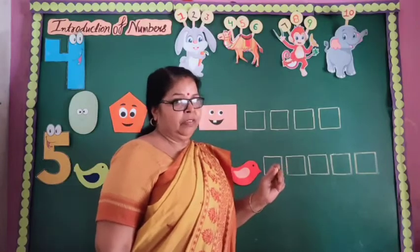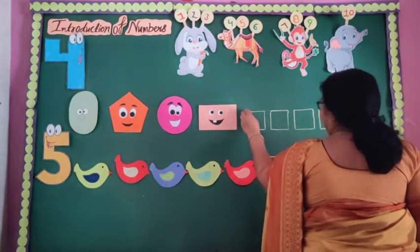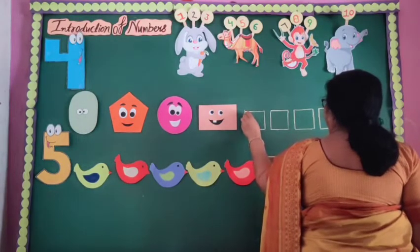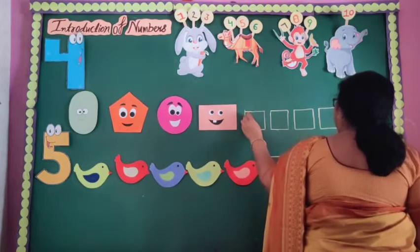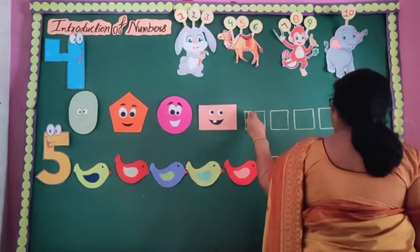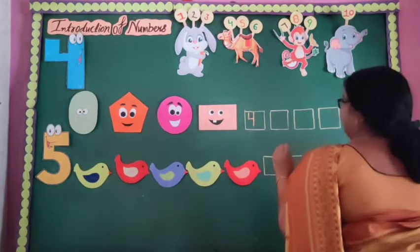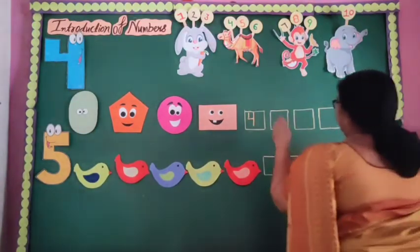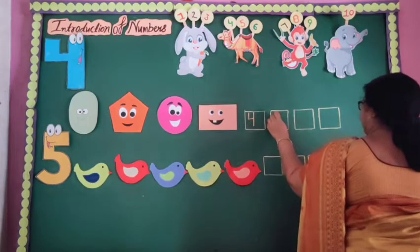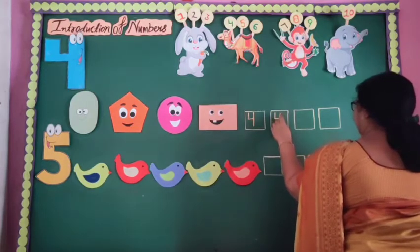How to write number 4. First of all, we draw a small standing line. After that, we draw a small slanting line. After that, we draw a standing line like a base. Let's make number 4. A small standing line, after that a small slanting line, after that make one standing line. Make 4.